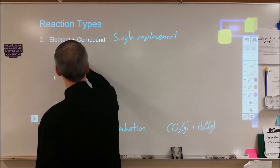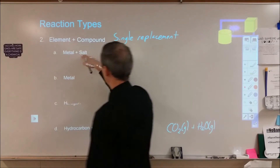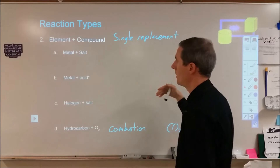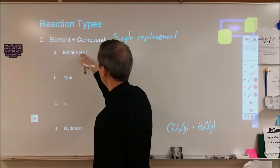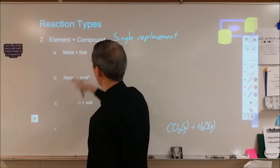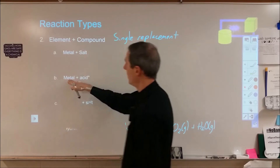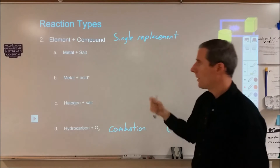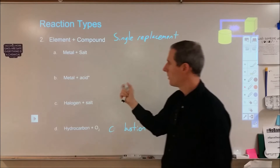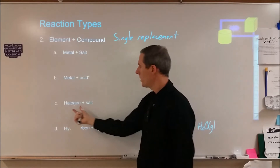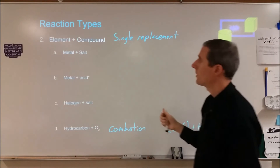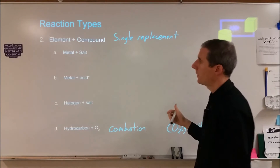In the case of combustion, we would make CO2 gas and steam, or water that could eventually turn into liquid form. For everything else, we're looking at a single replacement. However, there are still different types of single replacement. If we're looking at a metal element plus an ionic compound or salt, that involves one way to predict the products. Metal plus acid is similar but with a slight twist. Halogen plus a salt will come out a little differently.